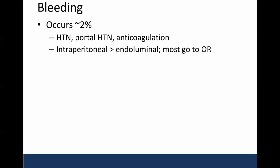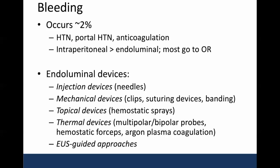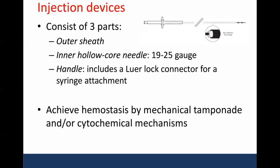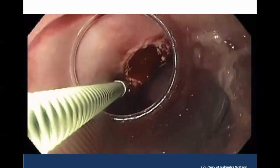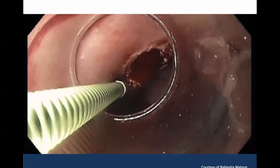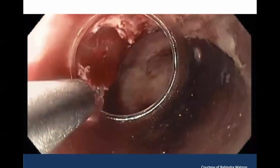However, since I am an interventional endoscopist, I'm mostly going to provide my thoughts on what endoscopic tools could be useful in the small percentage of patients that we treat endoscopically. And while there are many endoluminal devices, the few that I think would be most useful in this context would be injection needles, mechanical devices, and topical devices. Injection needles consist of three parts and predominantly achieve hemostasis by mechanical tamponade.